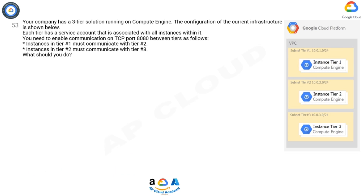Question. Your company has a free tier solution running on Compute Engine. The configuration of the current infrastructure is shown below. Each tier has a service account that is associated with all instances within it. You need to enable communication on TCP port 8080 between tiers as follows: instances in tier one must communicate with tier two, and instances in tier two must communicate with tier three. What should you do?